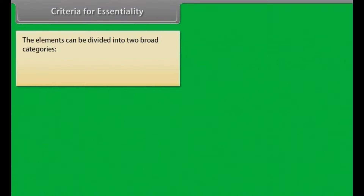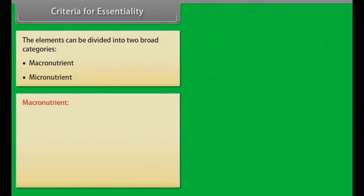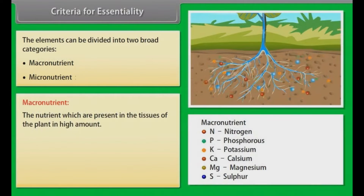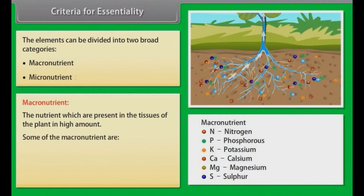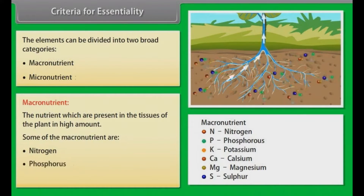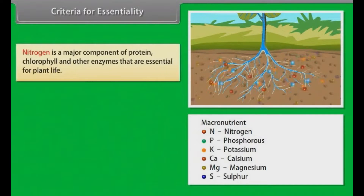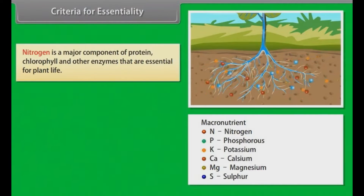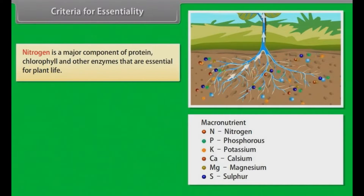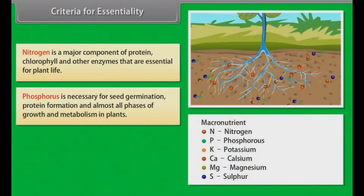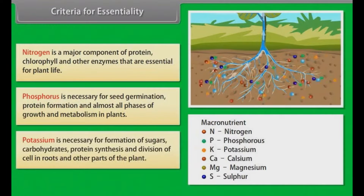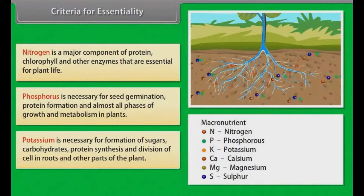Essential elements can be divided into two broad categories: macronutrients and micronutrients. Macronutrients are nutrients present in plant tissues in high amounts; examples include Nitrogen, Phosphorus, and Potassium. Nitrogen is a major component of protein, chlorophyll, and enzymes. Phosphorus is necessary for seed germination, protein formation, and growth. Potassium is necessary for formation of sugars, carbohydrates, protein synthesis, and cell division in roots.